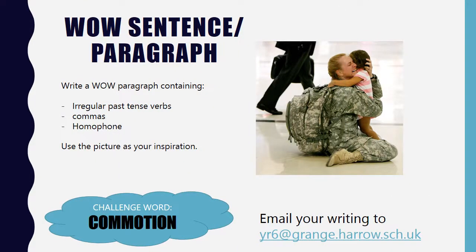We've got a powerful photo here. Think about what comes to your mind first when you see this photo, and then you're going to have a go at writing a wow paragraph to go alongside it. We can see what looks like a mother being reunited with her child. I want you to write a paragraph containing an irregular past tense verb, some commas and some homophones — remember to use the picture as your inspiration. Your challenge word from your spellings today is commotion, which means something has happened and there's something disrupting the peace.